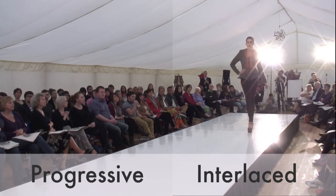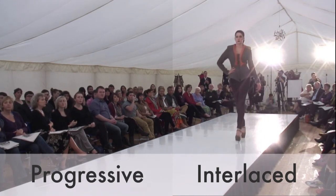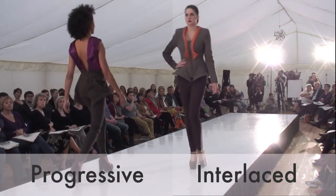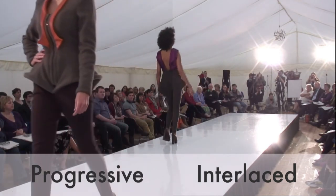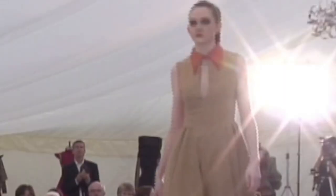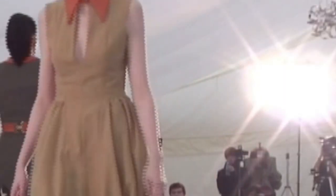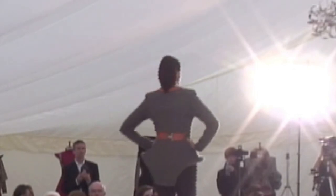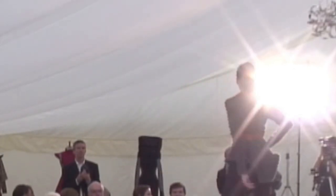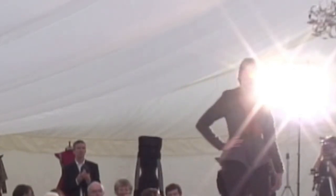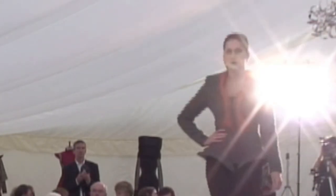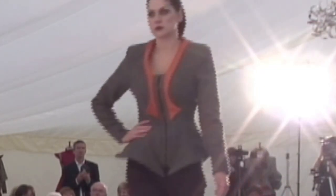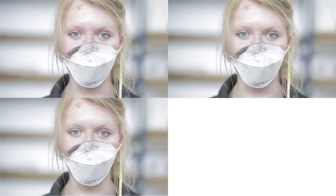That is because these devices use progressive to display their video. When interlaced video is displayed on a progressive monitor, the individual fields are visible, creating an unattractive zigzag effect around any area of movement. This should be taken into consideration when making camera choices and setting up your project. Progressive records and displays video as whole complete frames, similar to cinema.